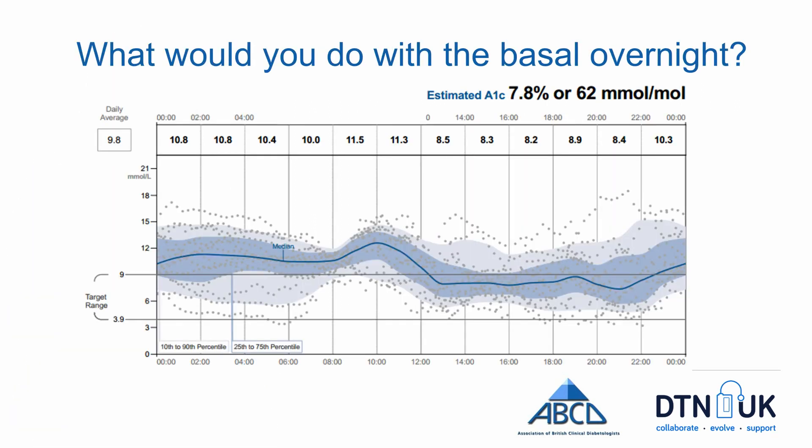Here's an example of somebody's Freestyle Libre data — an ambulatory glucose profile, essentially a summary of where all the glucose levels lie over the last fortnight. The dark blue line shows the median value across that period, and the dark blue shaded area is where 50% of the values lie. We can see that the glucose seems quite flat and stable overnight, but we're waking up with a high glucose in the morning. To tackle that, it's wise to look at the underlying detail by moving on to the daily traces.